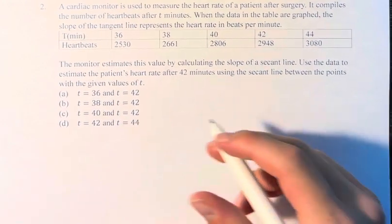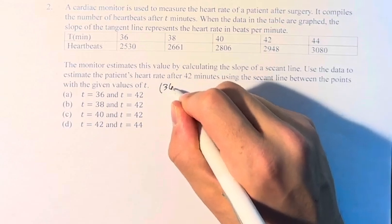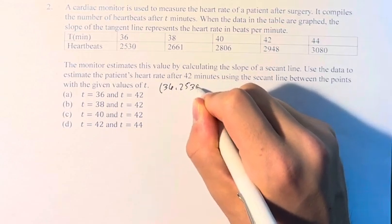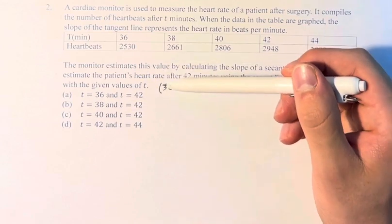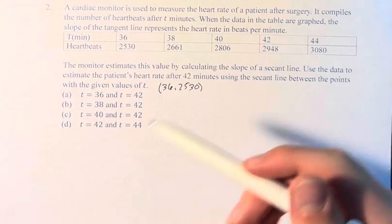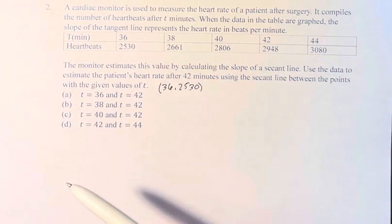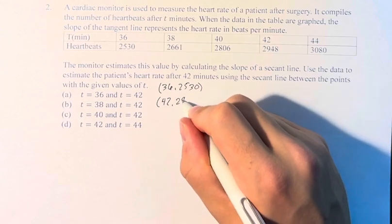So first we do 36. The point (36, 2530) corresponds to t equals 36 and a total heartbeat accumulated up to that point of 2,530. And then 42, 2,948.